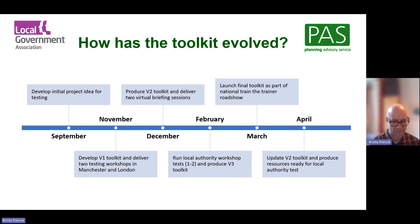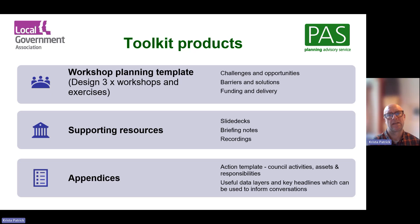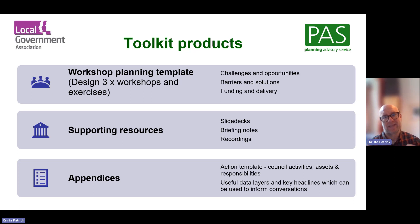From April onwards, we're looking to further update it and get out there testing with authorities and co-produce the further development of the toolkit. We have a number of products: the workshop planning template with templates for three workshops — challenges and opportunities, barriers and solutions, and funding and delivery — along with supporting resources including slide decks, briefing notes, recordings of how to deliver these, and appendices. There's also an action template that takes you through the whole process, providing a template to input feedback and key issues, giving you a paper trail from start to finish ending with key actions. We also have useful data layers and key headlines.